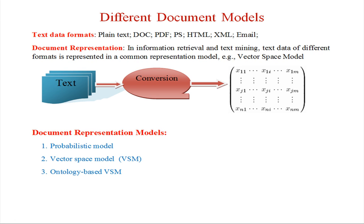Now the different document models. Text data can come in formats like plain text, PDF, PostScript, HTML, XML, email, etc. To represent a document, we first apply conversion techniques to convert everything to text, and then represent the document in a matrix form where every row represents a document and every column represents a term. For example, x11 represents the first term of the first document, and x1i represents the i-th term of the document, and so on.